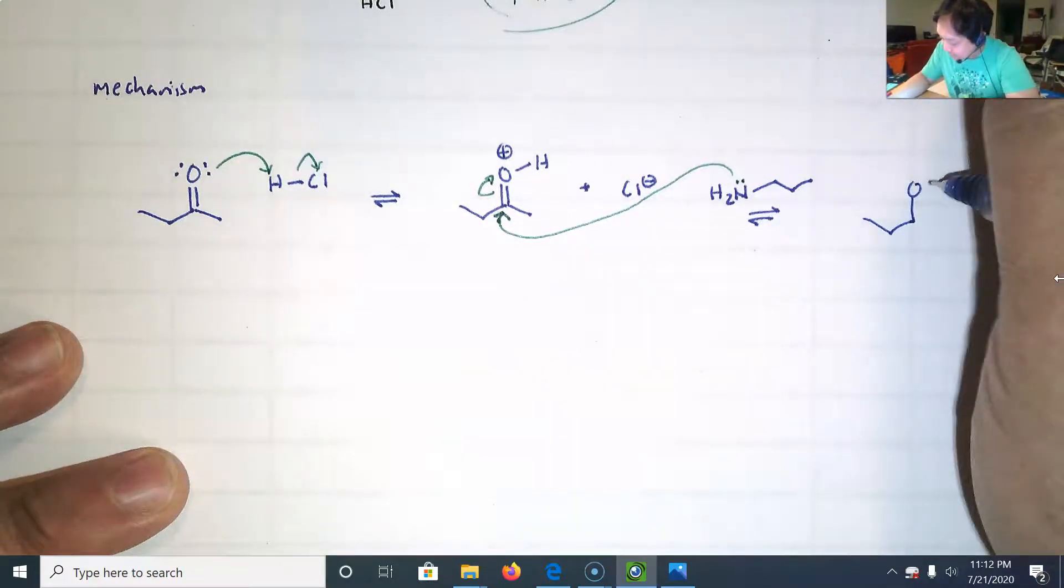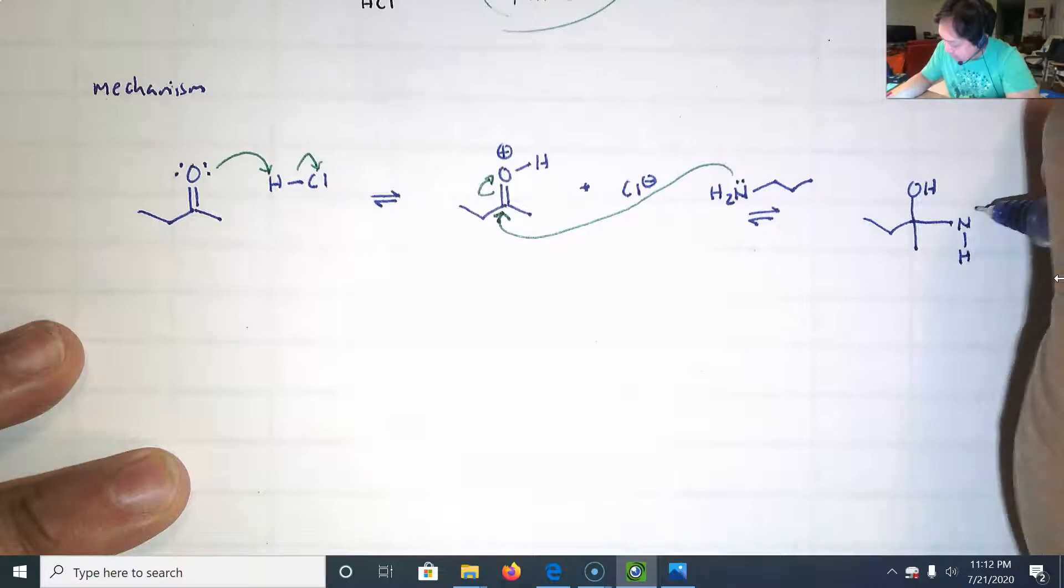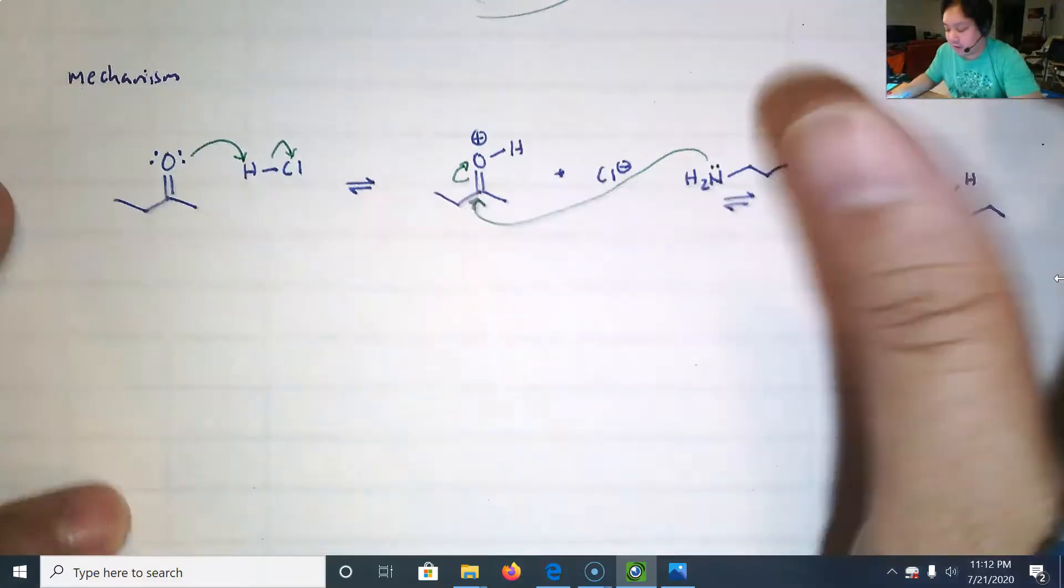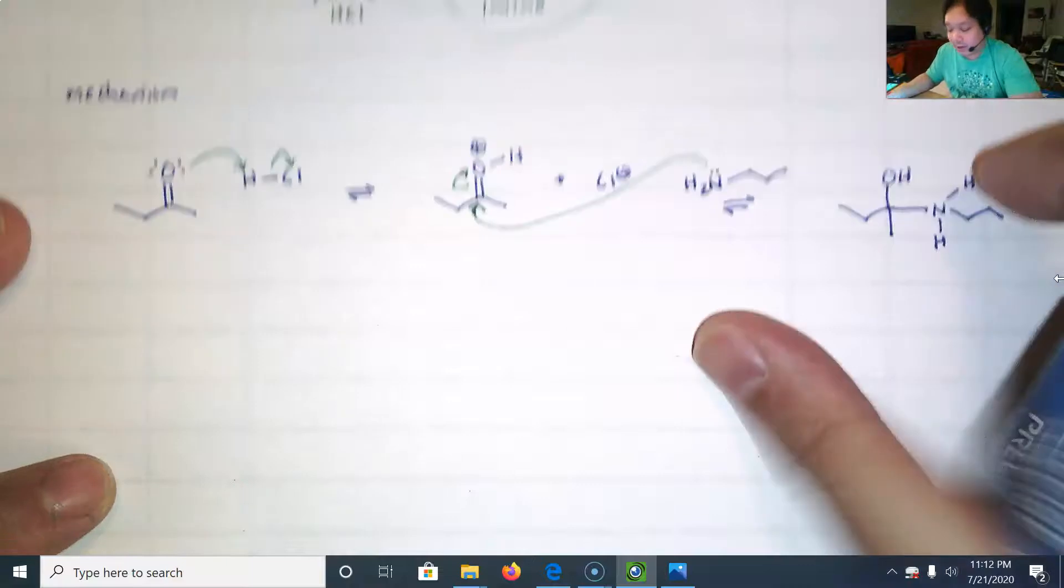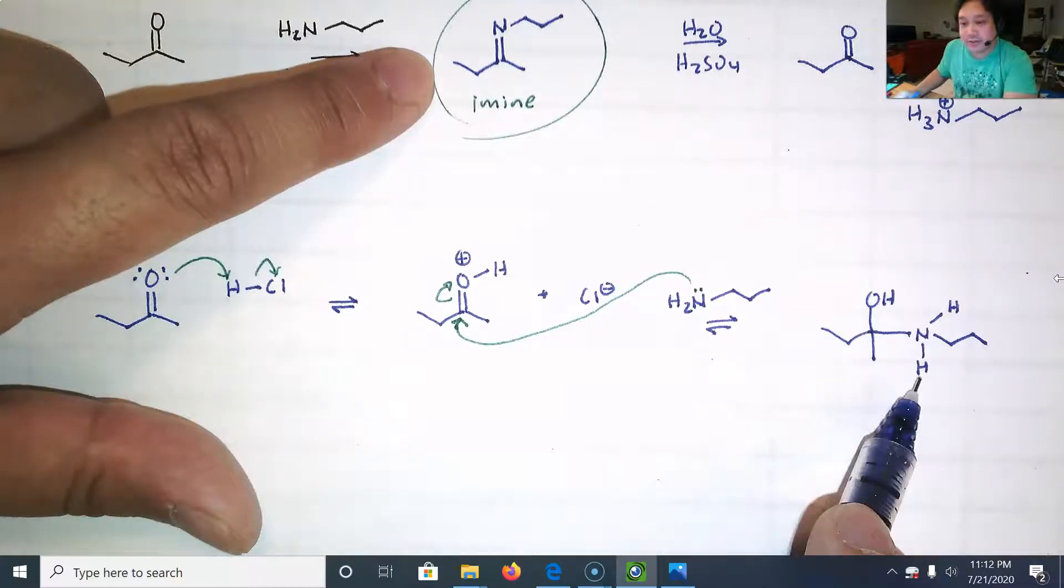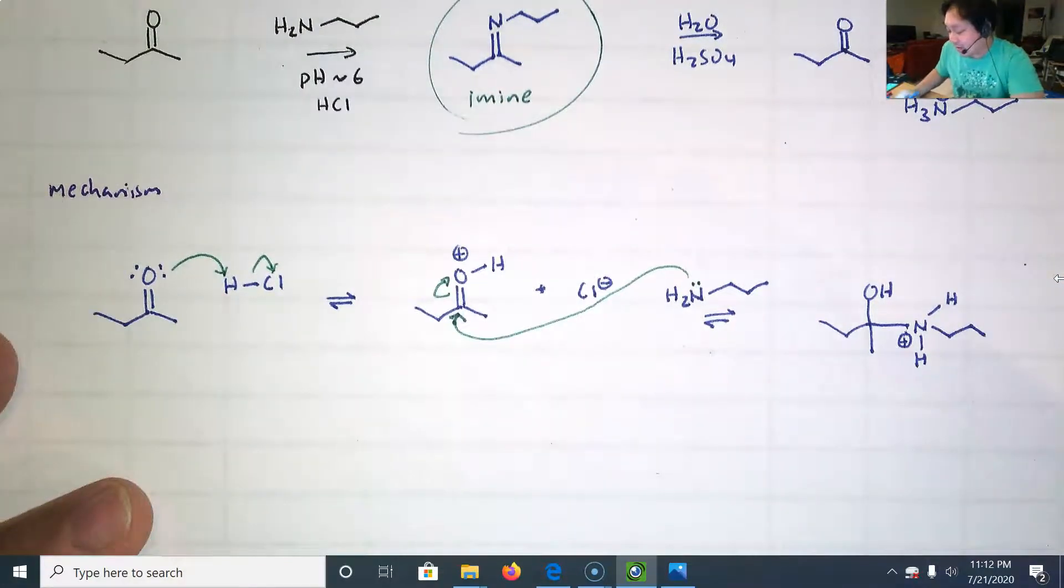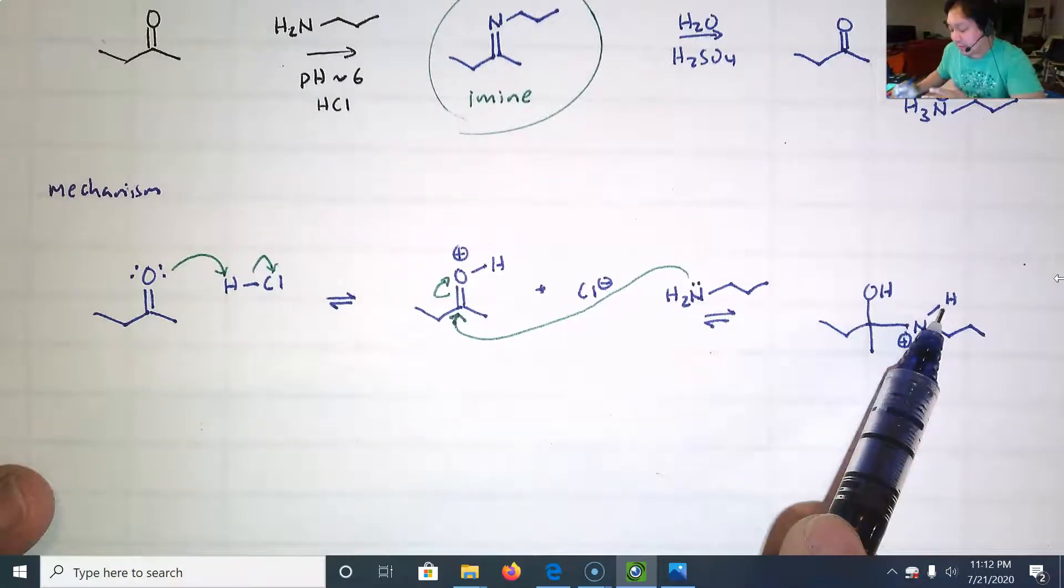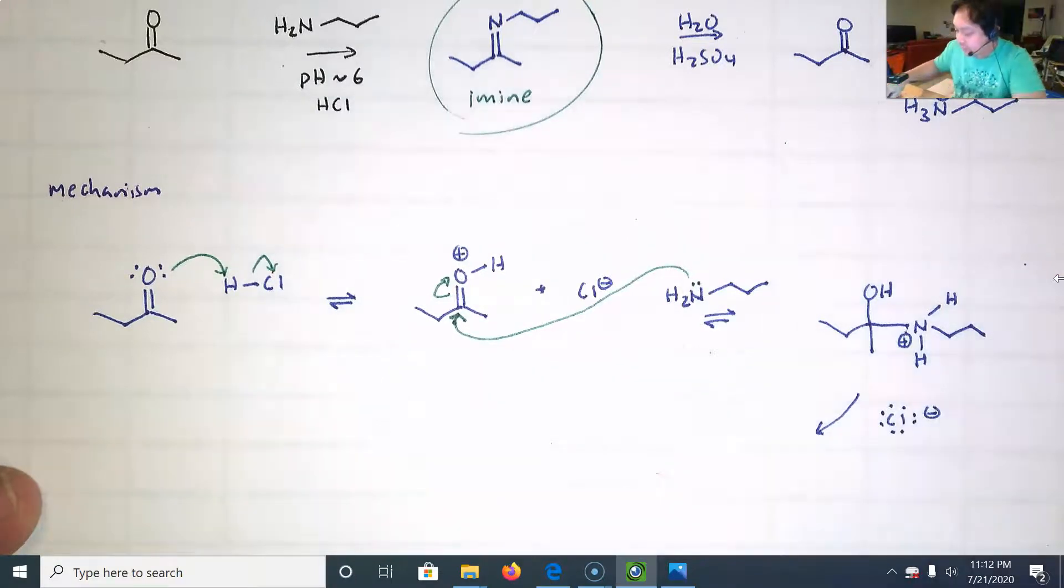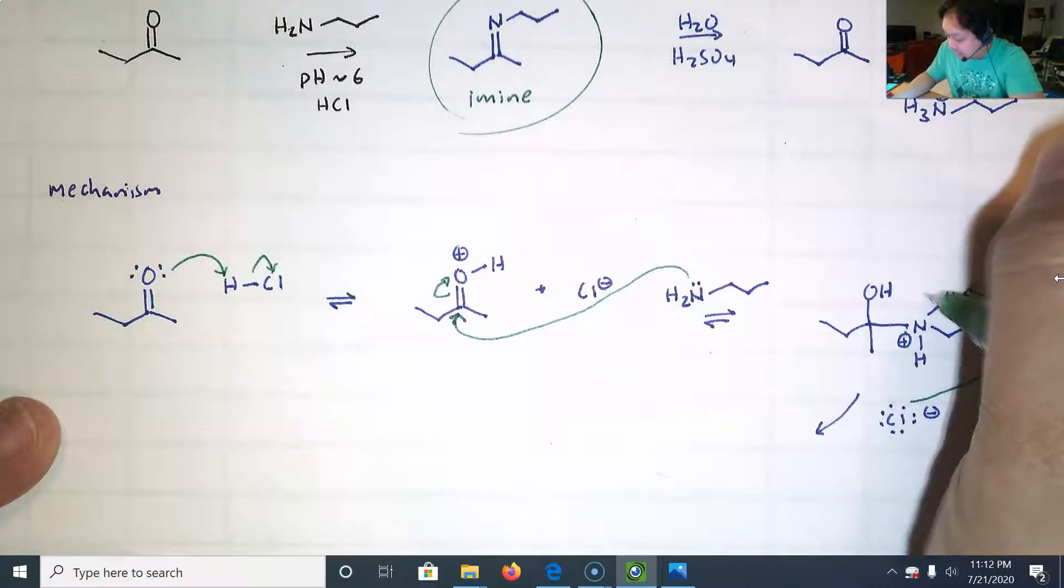We form a tetrahedral intermediate. I don't typically like doing an intramolecular proton transfer. If you look at the product, you know that we do have to kick out this OH group but also get rid of one of these hydrogens. So it would be great if we could protonate this by deprotonating that, but I don't like doing intramolecular proton transfers because in actuality, most likely it does it in steps.